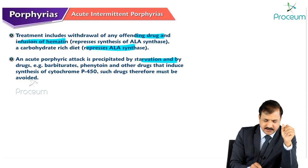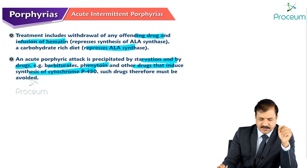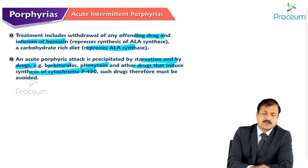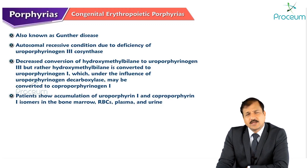An acute porphyric attack is precipitated by starvation and by drugs like barbiturates, phenytoin, and other drugs that induce cytochrome P450 synthesis. Such drugs must be avoided to prevent acute porphyric attacks.